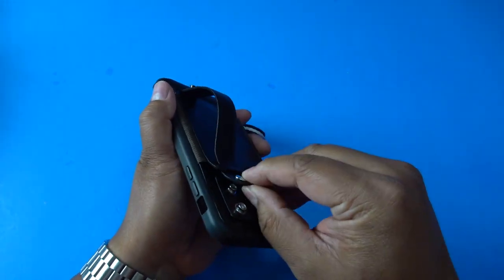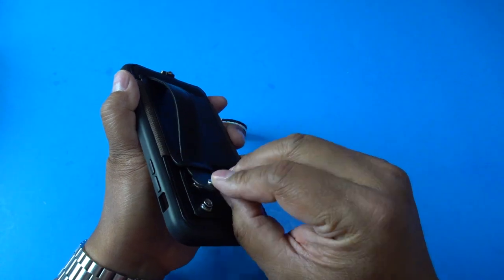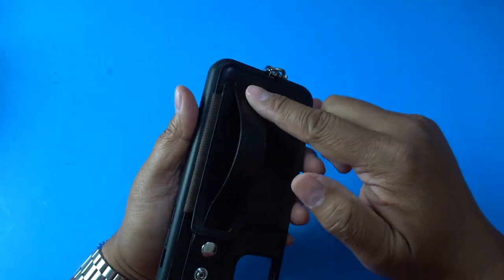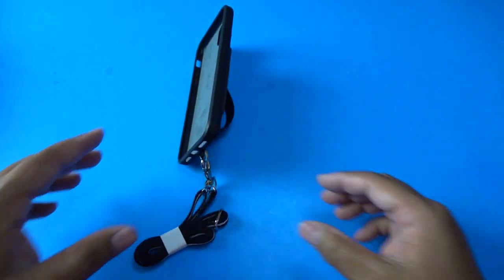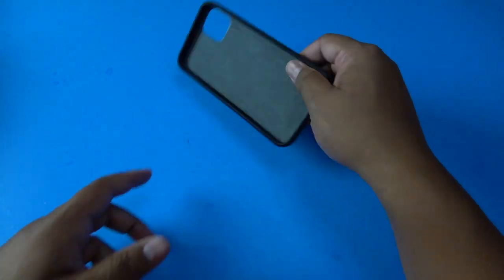If you move it down a notch to the second option button right here you notice that there's a little curve here and that'll let you sit up the phone like this so that you can watch something on your phone.